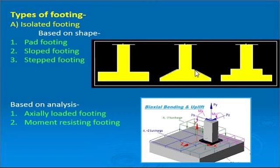Since the depth of the footing is governed by shear and bending moment criteria, maximum shear and maximum bending moment both occur at the face of the column, hence requiring more depth there. This gives rise to slope footing and step footing. Compared to pad footing, slope footing is always more economical.